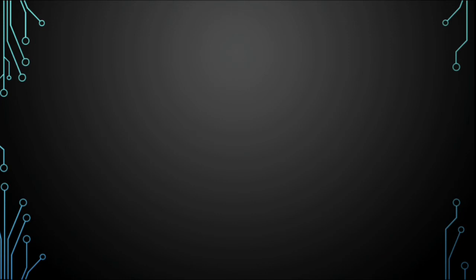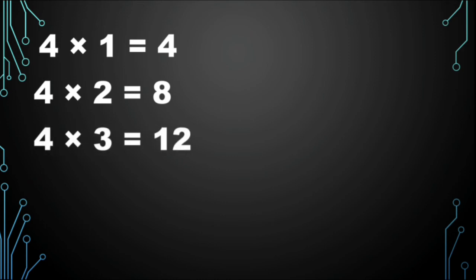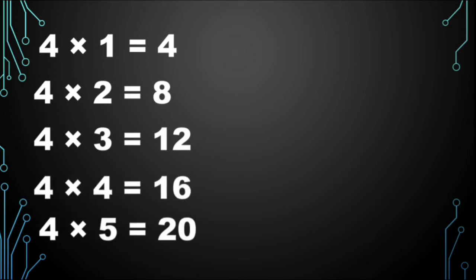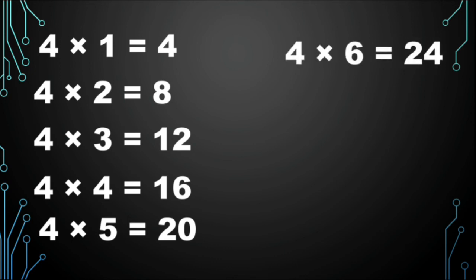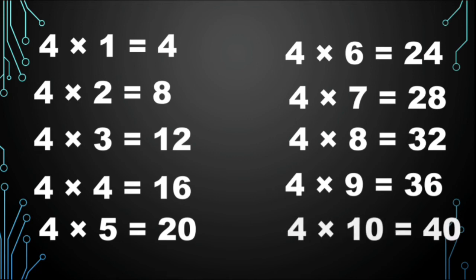Let's learn the table of 4 one more time. 4 1s are 4, 4 2s are 8, 4 3s are 12, 4 4s are 16, 4 5s are 20, 4 6s are 24, 4 7s are 28, 4 8s are 32, 4 9s are 36, 4 10s are 40.